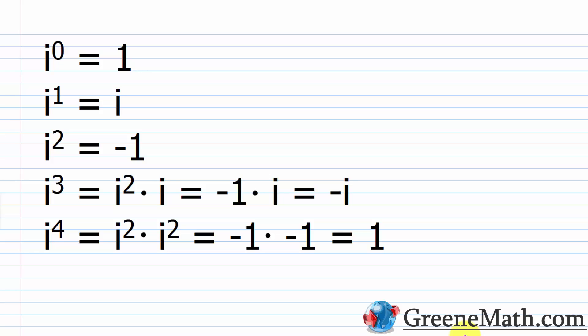The first thing I have listed here is i to the power of 0 is equal to 1. I just put this here for reference — we're not going to use it in the lesson. A lot of students ask whether i to the power of 0 equals 1, and the answer is yes. Any non-zero number raised to the power of 0 is always 1.